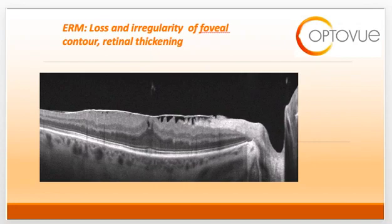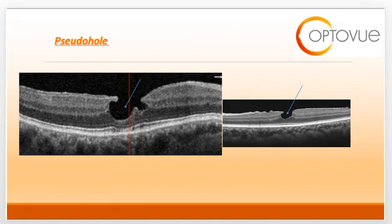Another finding from chronic ERM or strong ERM forces is a loss of the foveal contour. On this slide there is a complete absence of the foveal pit with overall retinal thickening and those sawtooth formations of the ILM adherent to the epiretinal membrane. The pseudo-hole is another type of partial thickness hole associated with an epiretinal membrane. It is partial thickness because there is still residual healthy outer retinal tissue present, and it is usually a complication of epiretinal membrane formation.